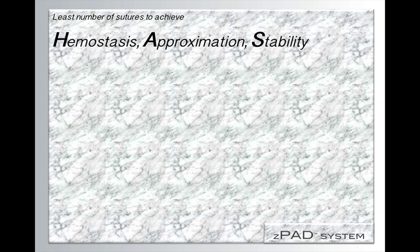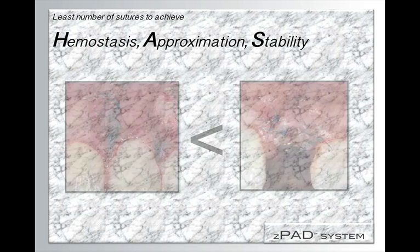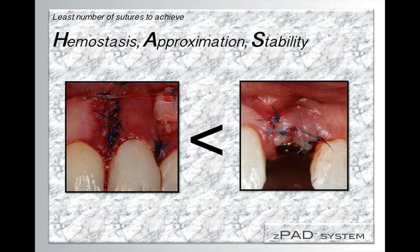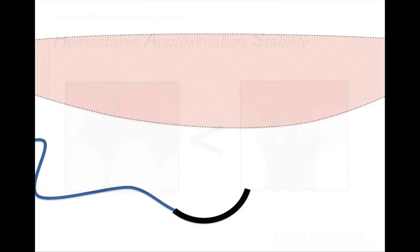Also, in regards to the number of sutures, use the least number of sutures to achieve your goal. And the goal is basically to minimize your bleeding, hemostasis, approximate the tissue and create some stability. So actually, when you suture, less suturing is better, less is more. And as long as you achieve your results, your flaps are stable, there's no bleeding, and the tissue is well approximated, you will get a good outcome with minimal trauma.